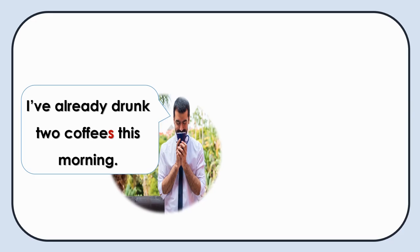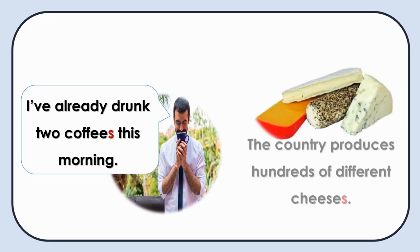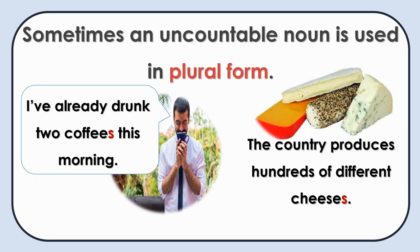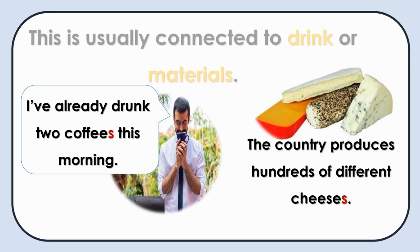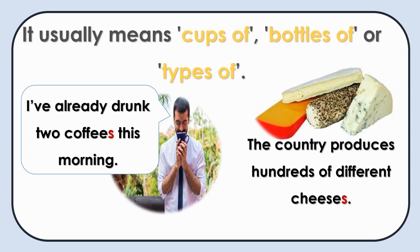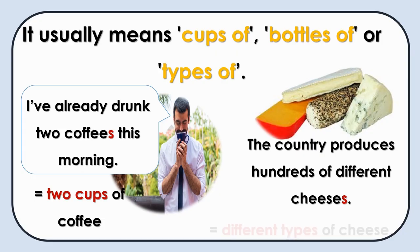Sometimes an uncountable noun is used in plural form: 'I've already drunk two coffees this morning.' 'The country produces hundreds of different cheeses.' This is usually connected to drinks or materials, and it usually means 'cups of,' 'bottles of,' or 'types of' — cups of coffee, different types of cheese.